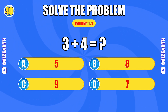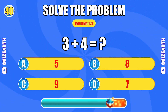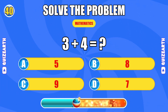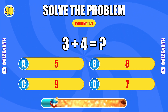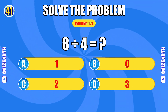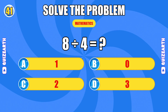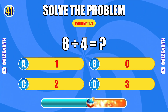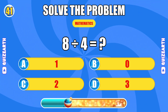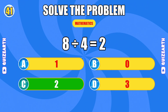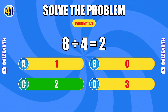What is three plus four? Too smooth — the answer is seven. How much is eight divided by four? Incredible — the answer is two.